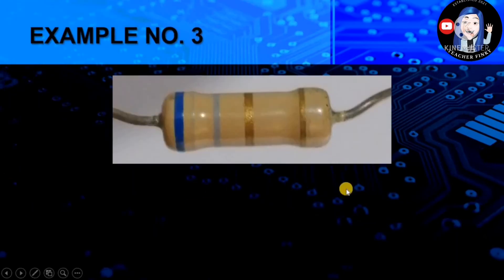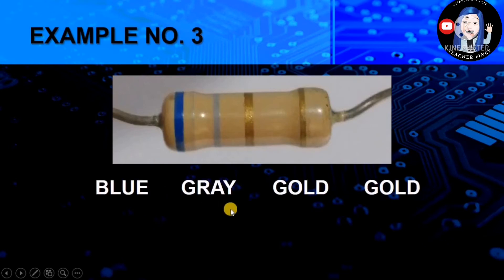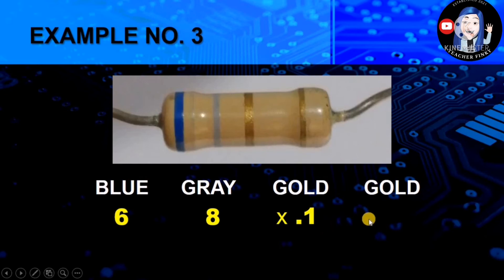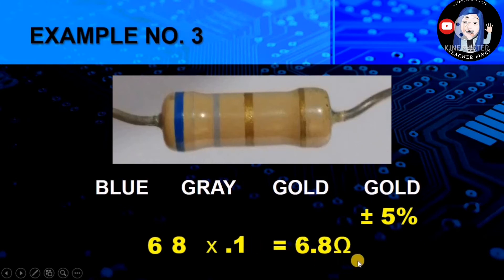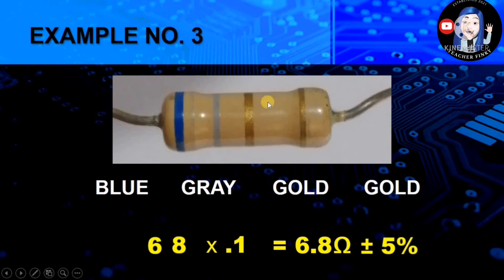Let's move on to the next example with another color combination: blue, gray, gold, and gold. Blue has a value of 6, gray is 8. Gold as the multiplier has a decimal value of 0.1, while gold as the tolerance has a value of plus/minus 5%. Multiplying 68 by 0.1, the answer is 6.8 ohms plus/minus 5%. The technique: if you see gold as the multiplier, remember there is a decimal point between the first and second digit, because its value is times 0.1.